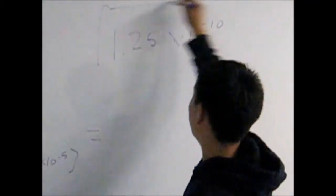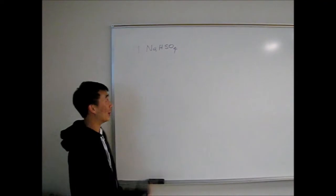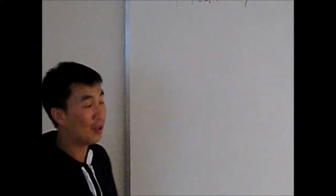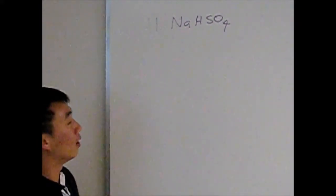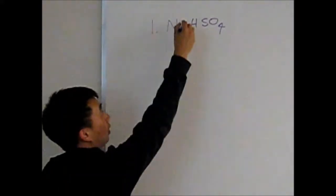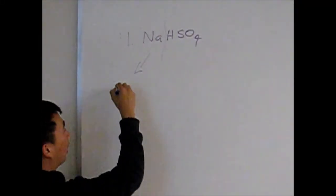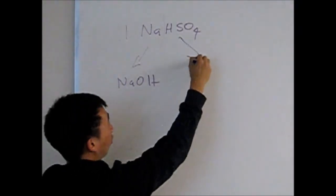I'm back again and this is the question for number 9, 11—excuse me. For the salt NaHSO4, we're trying to figure if it's acidic, basic, or neutral. First things first, from the salt we want to split them up into its perspective things. We know that Na makes NaOH, and HSO4 splits up into H+ plus SO4 2-.